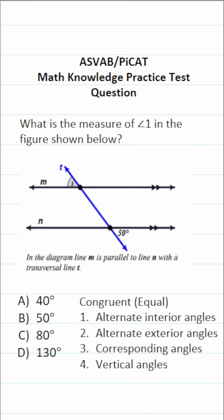Let's talk about alternate interior angles. This angle and this angle are equal because they are alternate interior angles. Alternate exterior angles are also going to be congruent or equal — this angle and this angle are alternate exterior angles.